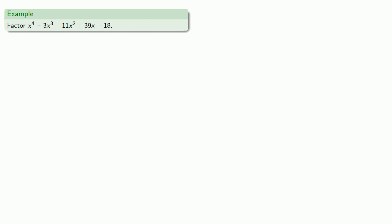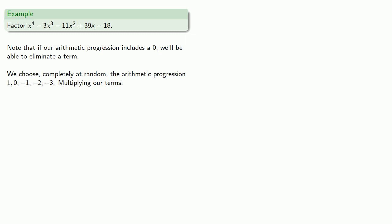For example, we might use the rule as follows. Let's try to factor this polynomial. And so we note that if our arithmetic expression includes a zero, we'll be able to eliminate a term. Now we choose completely at random the arithmetic progression, 1, 0, negative 1, negative 2, negative 3. And multiplying our terms...